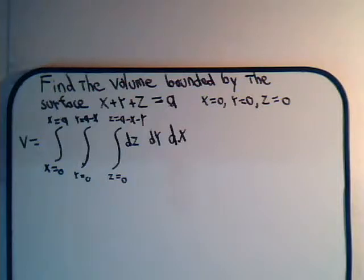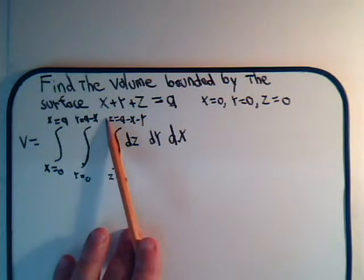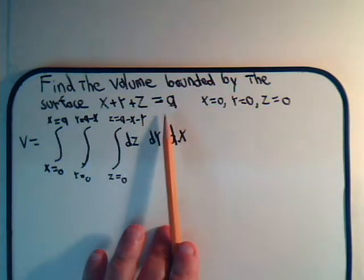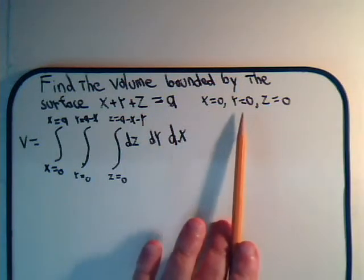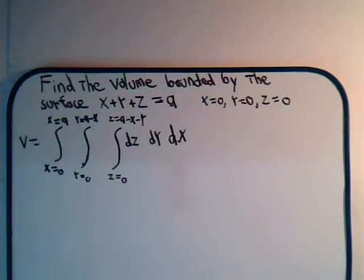Okay, in the last video, we were trying to find the volume integral for the surface defined by the equation x plus y plus z equals a, and we had boundary points where x was zero, y was zero, z was zero. We sketched the figure out, and then from there we went through the process of taking imaginary volume slices out and constructing our volume integral, which came out to be like this with these limits on it. Now we have to evaluate the integral.